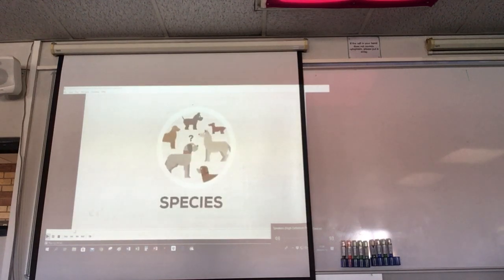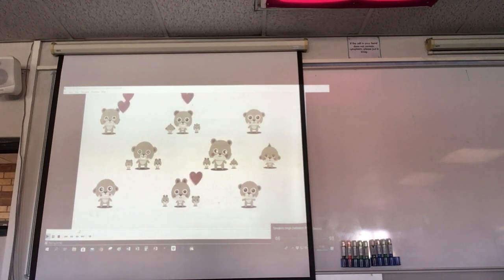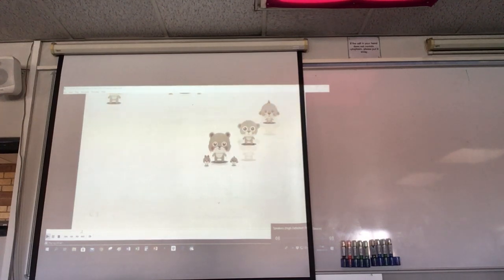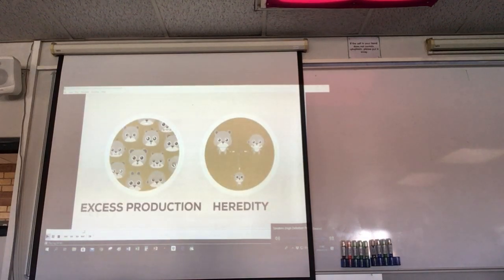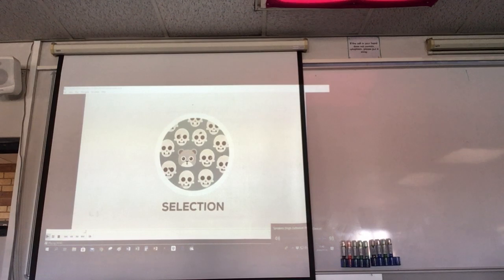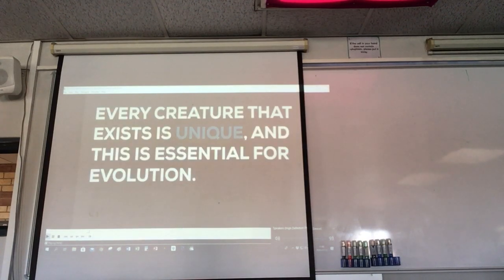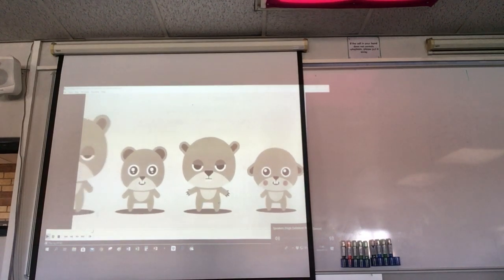What exactly is a species? A species is a community of animals that is capable of producing offspring with one another, with those offspring also being capable of reproducing in turn. To understand this answer better, we need to take a closer look at the following points: the uniqueness of living creatures, guaranteed through the excess production of offspring and heredity, and as a second key point, selection. Every creature that exists is unique, and this is essential for evolution. The members of a species may strongly resemble each other in appearance, however they all have slightly different traits and characteristics.